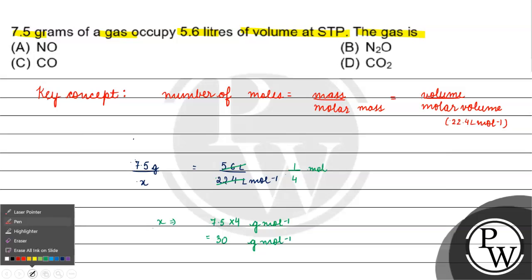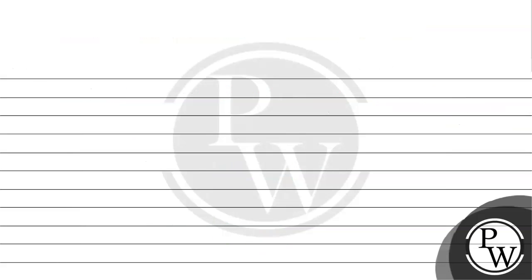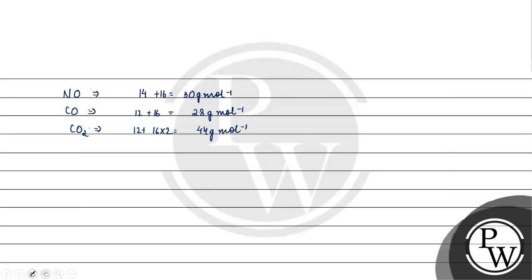The molecular mass comes out to 30 grams per mole. Now checking the options: NO — nitrogen atomic mass is 14, oxygen is 16, so 30 grams per mole. CO — carbon is 12, oxygen is 16, so 28 grams per mole. CO2 — 12 plus 16 into 2 gives 44 grams per mole. N2O — 14 into 2 plus 16 gives 28 plus 16, which is 44 grams per mole.